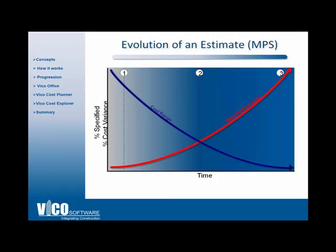Most of you are already familiar with this graph that shows how a project progresses through time. On the vertical axis it shows how specification levels and variance decrease and increase. The blue graph shows the cost range — as you start your estimate, your cost range and variance are high and the specification level of the design is low. As the estimate evolves, the specification level becomes more complex and higher, and the cost range and variance decrease. By the end of the job when you formulate your GMP, you'll have a very small cost range near zero and a high level of specificity.